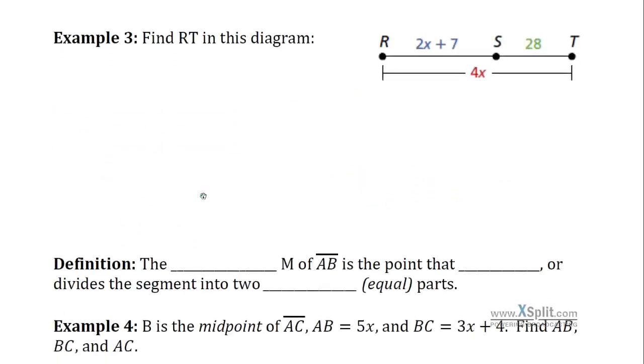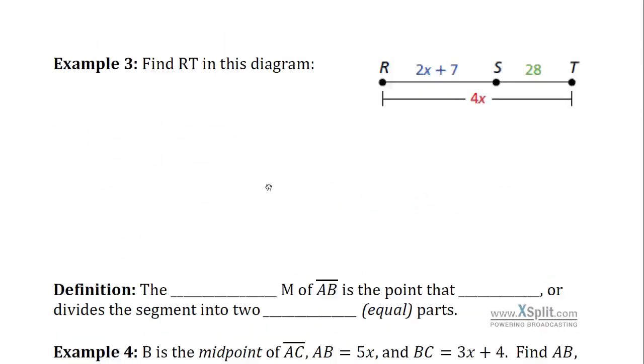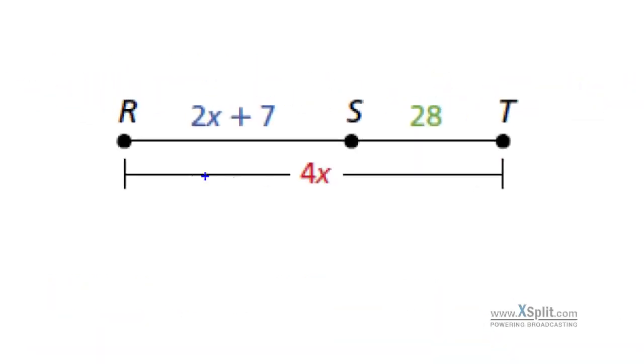We can also do this with algebra. Suppose we have this situation. We know that S is between R and T. We're given a situation here. It has several X's in it. We're introducing variables this time. I can go ahead and write an equation for this. Looking at this picture here, note that this R to S distance, if we add that distance to this S to T distance, that would be the same as going from R to T.